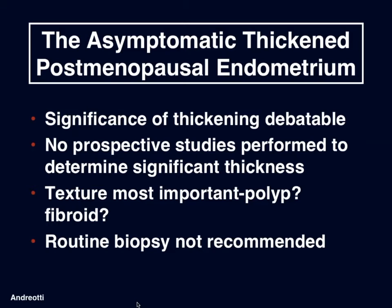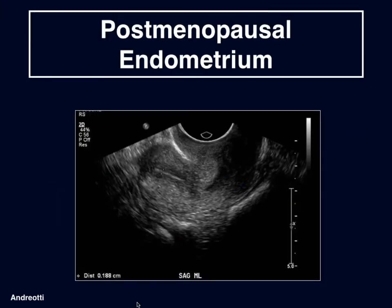If a patient is asymptomatic and not bleeding, the significance of endometrial thickening is highly debatable. There are no prospective studies performed to determine the significance of thickness. What seems to be more important is the texture of the endometrial echo — does it look like a polyp, does it look like a fibroid? Routine biopsy, no matter what the thickness of the endometrium is in a patient who is not bleeding, is not routinely recommended. Here is a typical appearance of the postmenopausal endometrium, which is extremely thin, usually less than about 5 millimeters.